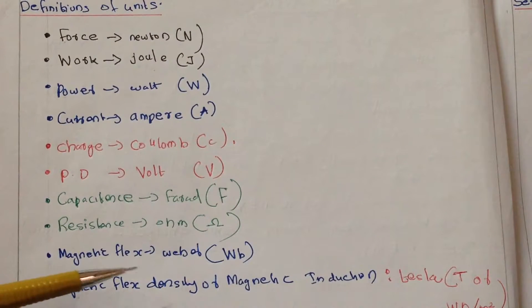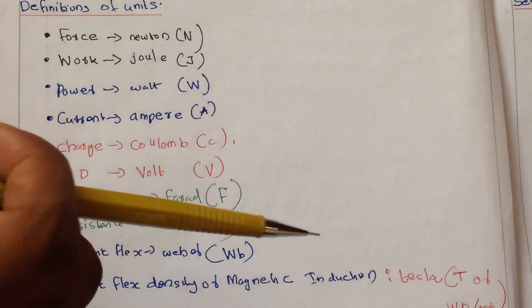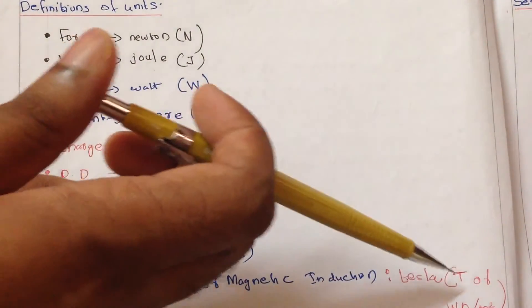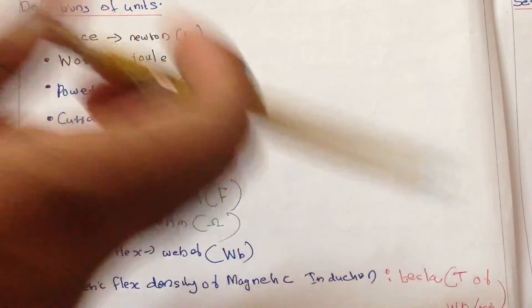The unit of magnetic flux density, or magnetic induction, is Tesla (T), which can also be expressed as Weber per meter square.